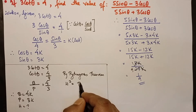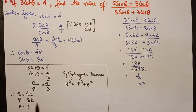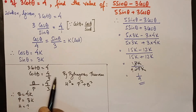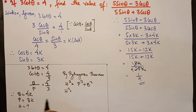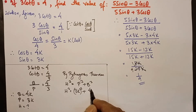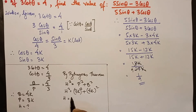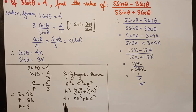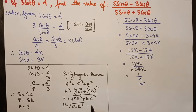Using Pythagoras theorem: h² = p² + b² = (3k)² + (4k)² = 9k² + 16k² = 25k². Therefore h = √(25k²) = 5k. So the value of the hypotenuse is 5k.